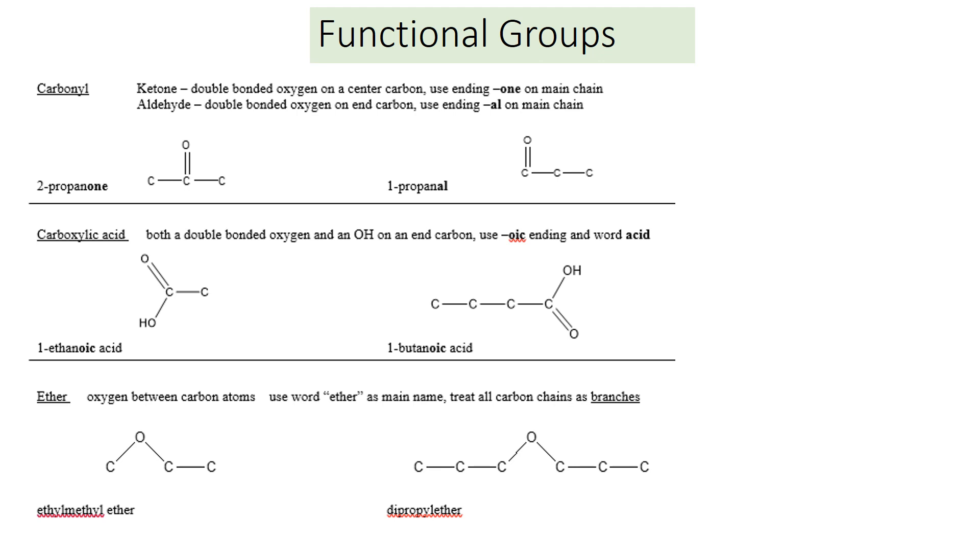The carbonyl group is a carbon with a double bonded oxygen. Several functional groups have that carbonyl group. The first one is ketone. A ketone has an ending of O-N-E, like propanone. We have the three carbons. O-N-E ending means it's a ketone and it's a double bonded oxygen on one of the interior carbons.